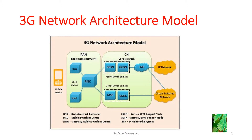In the circuit switch domain, we have a mobile switching center block and a gateway mobile switching center block. This circuit switch domain is connected to the circuit switch network. In the packet switch domain, we have SGSN — service GPRS support node — and GGSN — gateway GPRS support node. This packet switch domain is connected to IMS, that is IP multimedia system, and from that it is connected to the IP network.